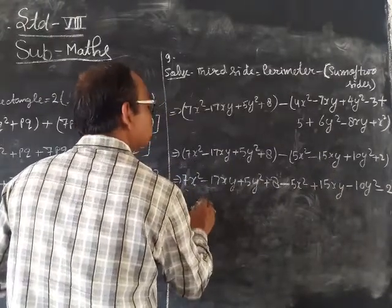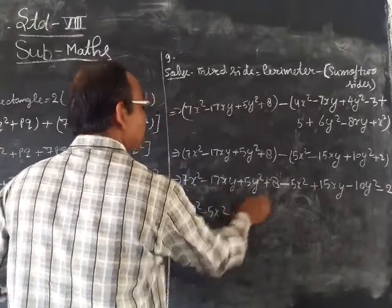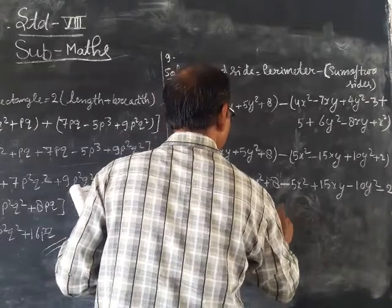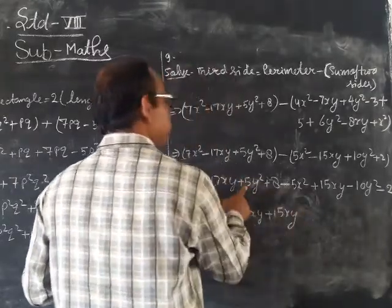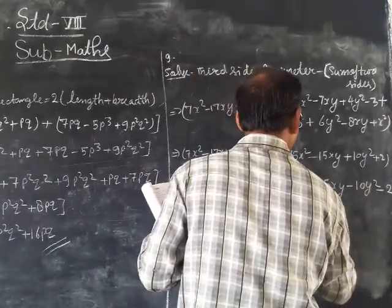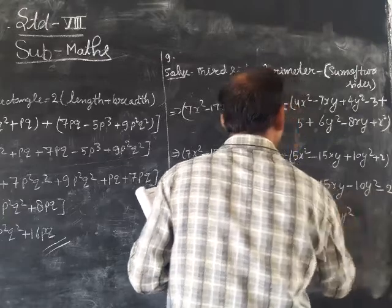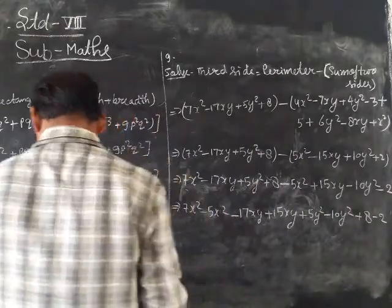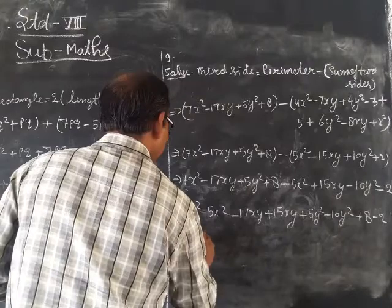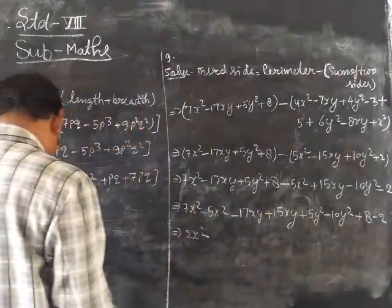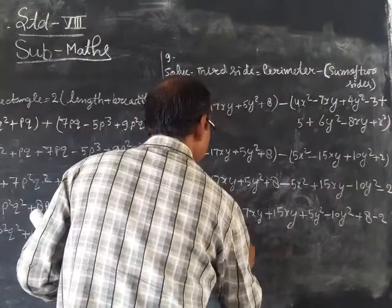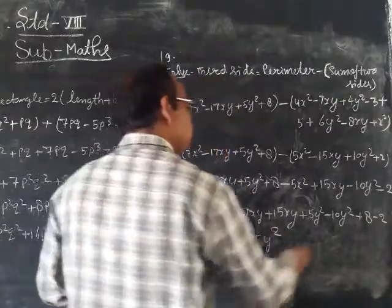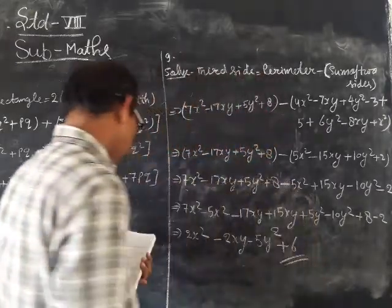This is same bracket, so we combine: 7x² minus 5x² is 2x². Minus 17xy plus 15xy is minus 2xy. Plus 5y² minus 10y² is minus 5y². Plus 8 minus 2 is plus 6.